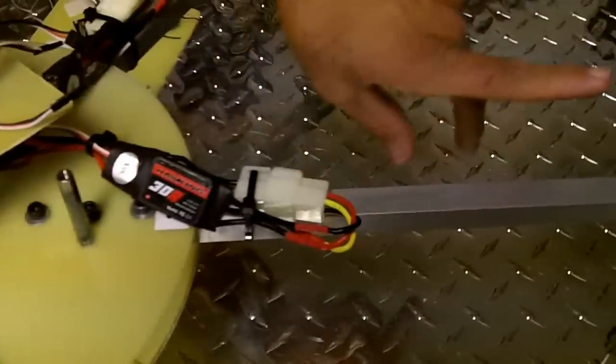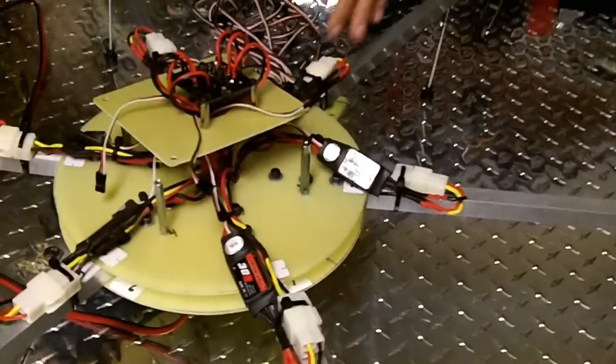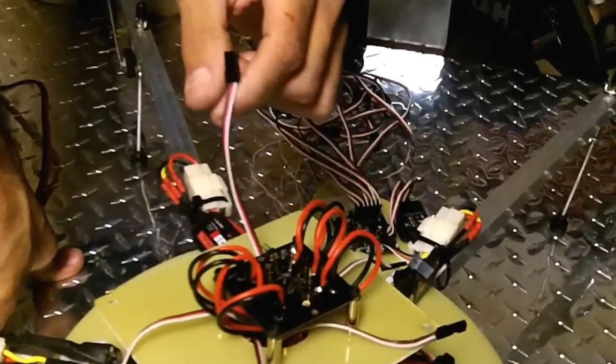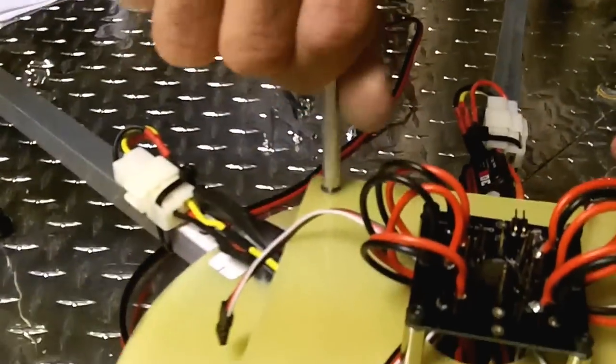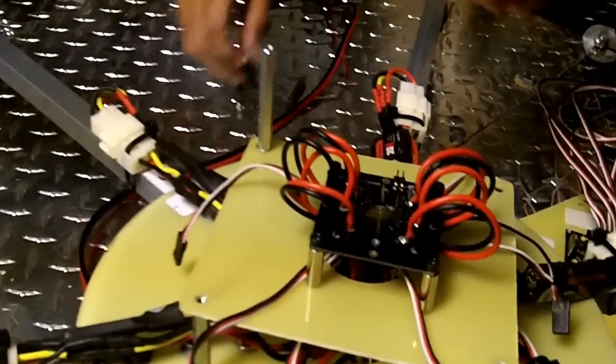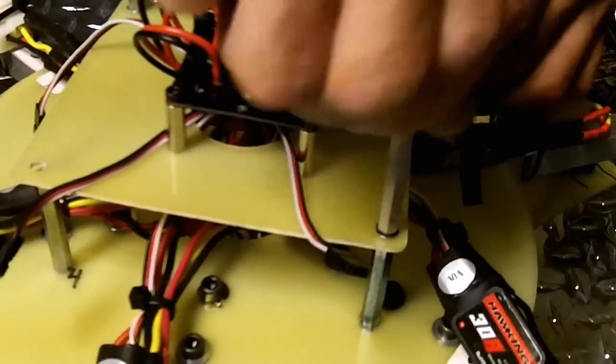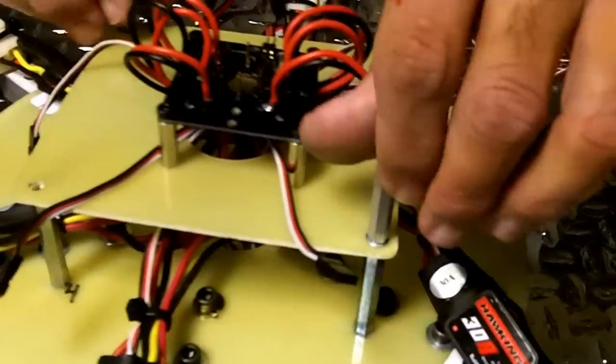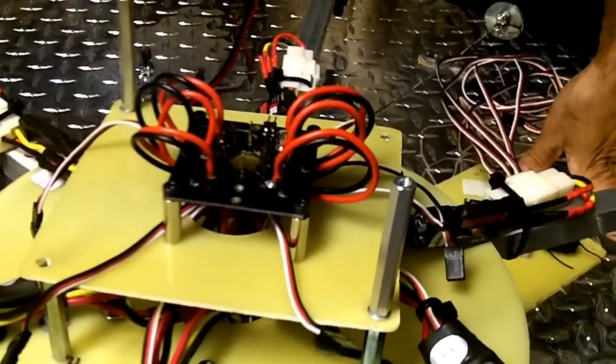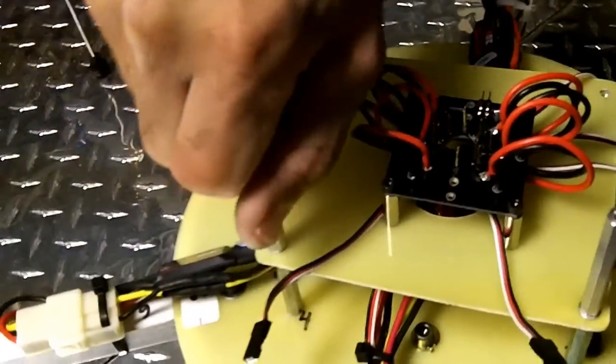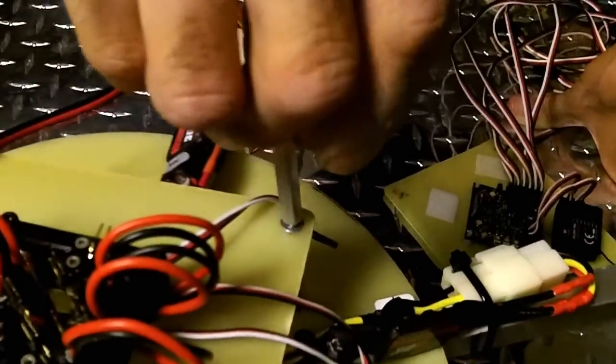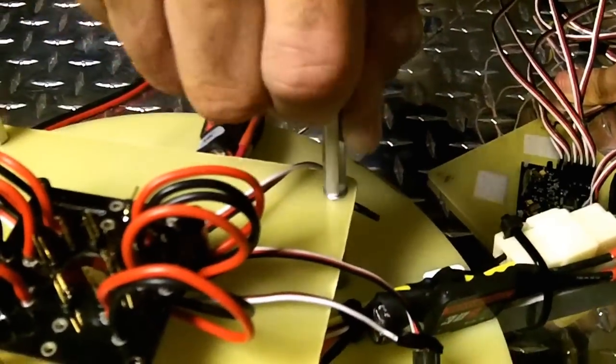The connectors here for the ESCs weren't long enough, so what I did is I'm going to add extensions to each one of them that way I can connect this whole thing. Now all these posts that I got, the spacers and standoffs, they're the same length. The reason why I'm just putting them like this is because I want to show you guys how this is going to look.